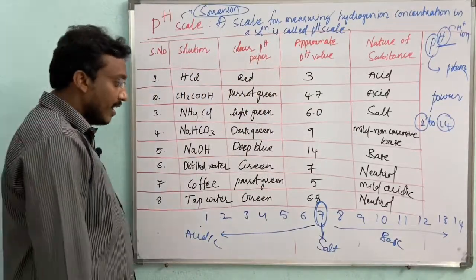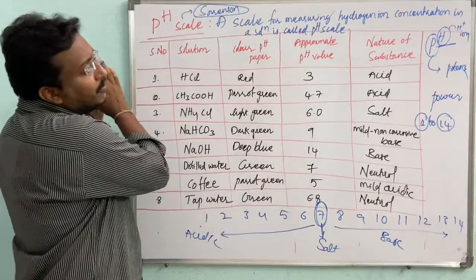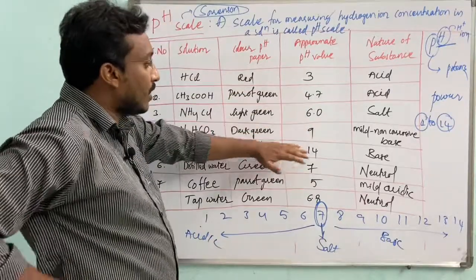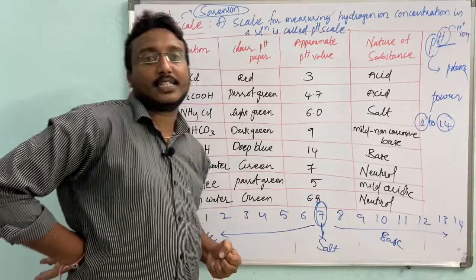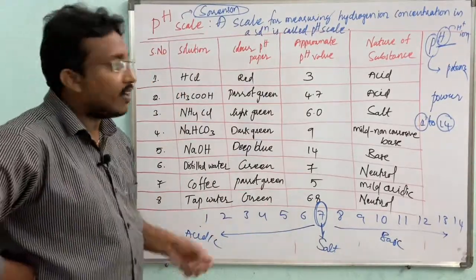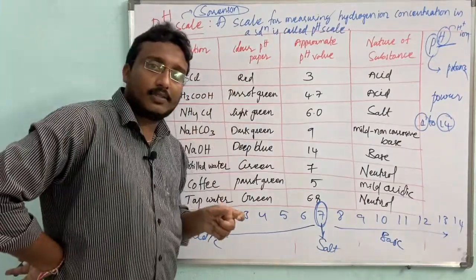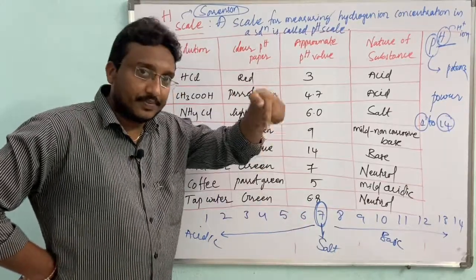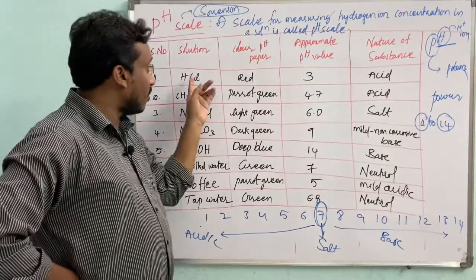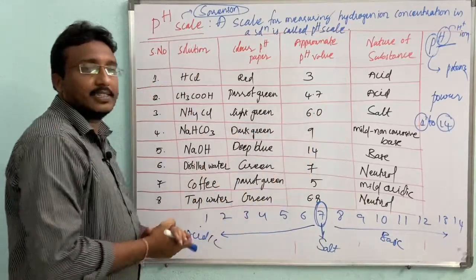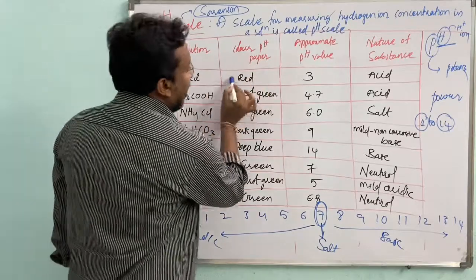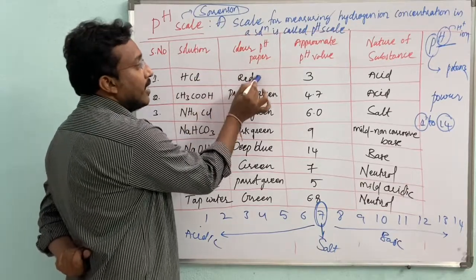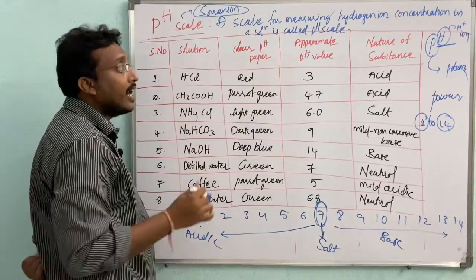Now here we have some observations written on the board based on testing with the pH indicator. Take a small quantity of HCl in a test tube and dip the pH indicator in it. The indicator shows red color when dipped in HCl.